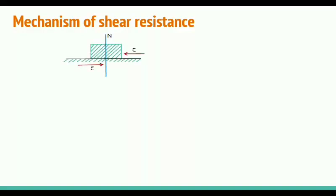In some cases, as we will see in further lectures, when the normal stress is zero, the soil still shows some resistance against shear stress. That shear resistance is due to cohesion — the true cohesion of the soil. We will cover that in coming lectures.